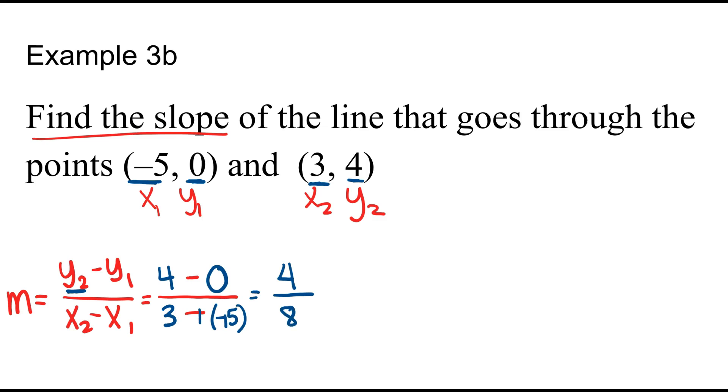Now these do have a common factor. You can type them in your calculator. You can say, oh, they both have a common factor of 4. When I divide the top by 4, I get 1. When I divide the bottom by 4, I get 2. m equals 1 half.